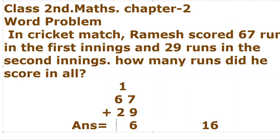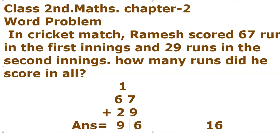Now at the tens place: 6 plus 1 carry is 7, plus 2 is 9. So the answer is 96. Ramir scored 96 runs in all.